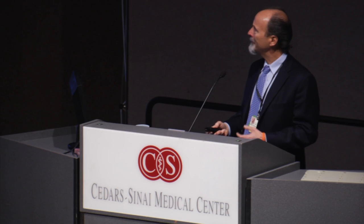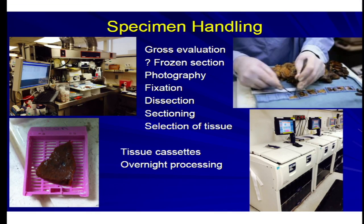A little bit about specimen handling. Generally, within a few minutes of having the tissue removed, it comes up to the pathology laboratory and we do some initial assessment. We'll look at it, measure it, cut it open. We'll procure some tissue — if there's tissue needed for a biobank, for immediate diagnosis, for a margin, or if you're enrolled in a study where fresh tissue needs to be sent off to a reference laboratory, we'll make arrangements to send that off immediately.